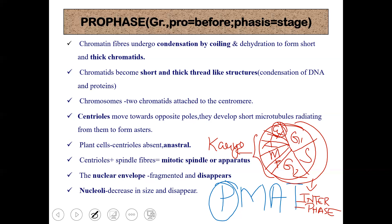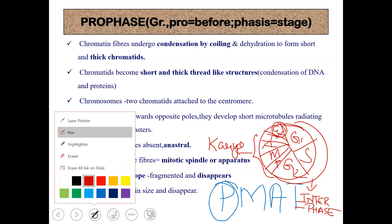Now the cell is ready for undergoing cell division after completion of the cell cycle. The cell cycle in case of human beings is about 24 hours, and out of 24 hours, 23 hours is spent during the preparation stage, that is interphase. The synthesis of biomolecules, the replication of DNA, the formation of RNA, protein synthesis — everything has already taken place in the interphase stages G1, S, and G2. Now the cell is completely ready; the nucleus is ready to undergo certain changes in prophase.